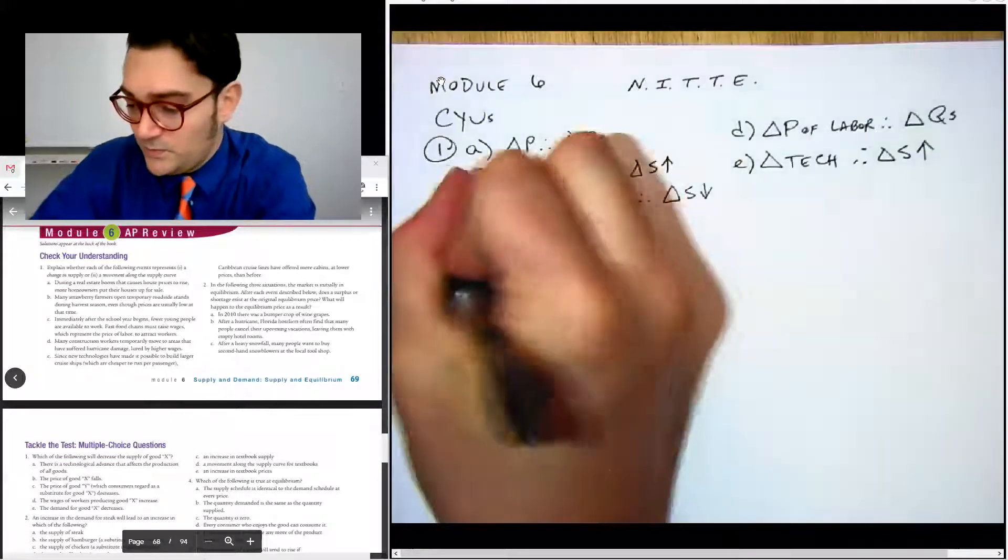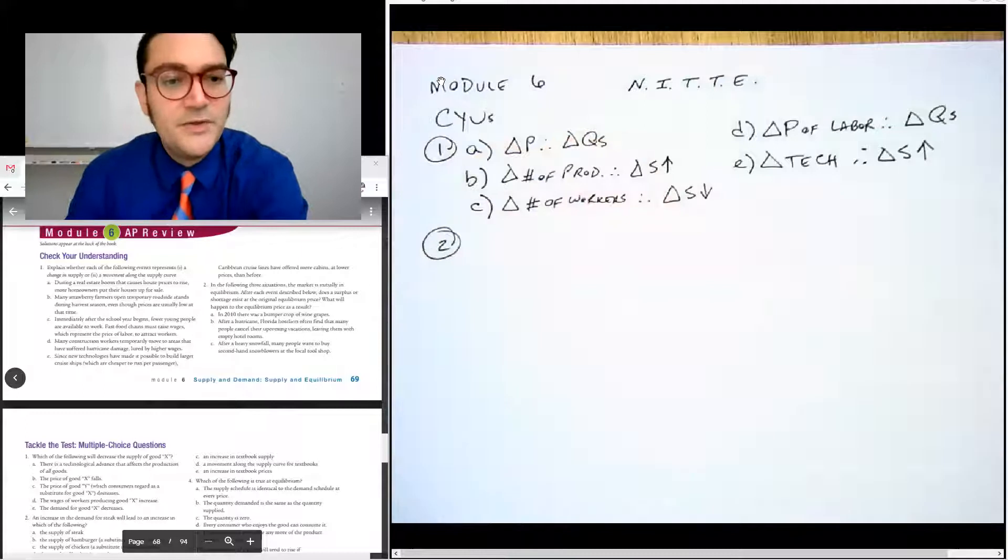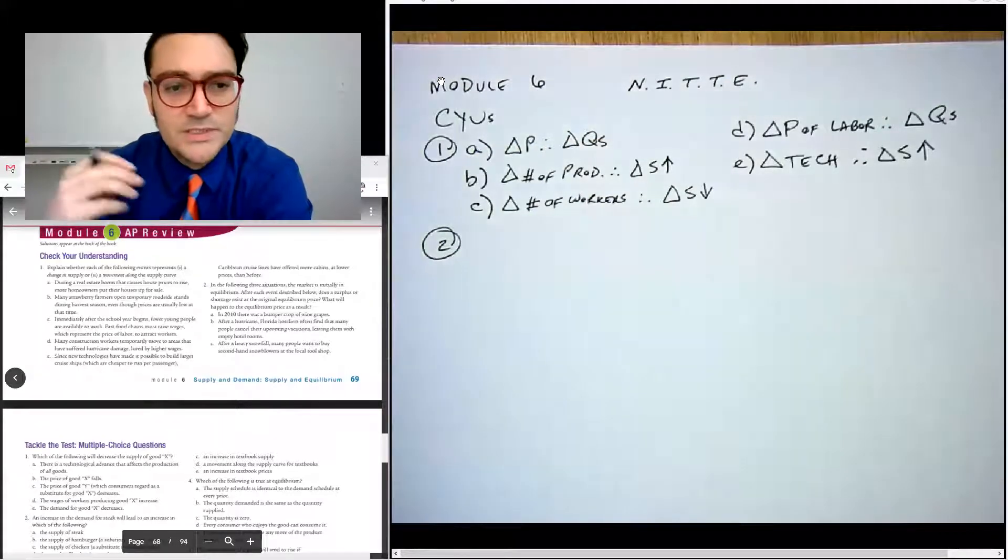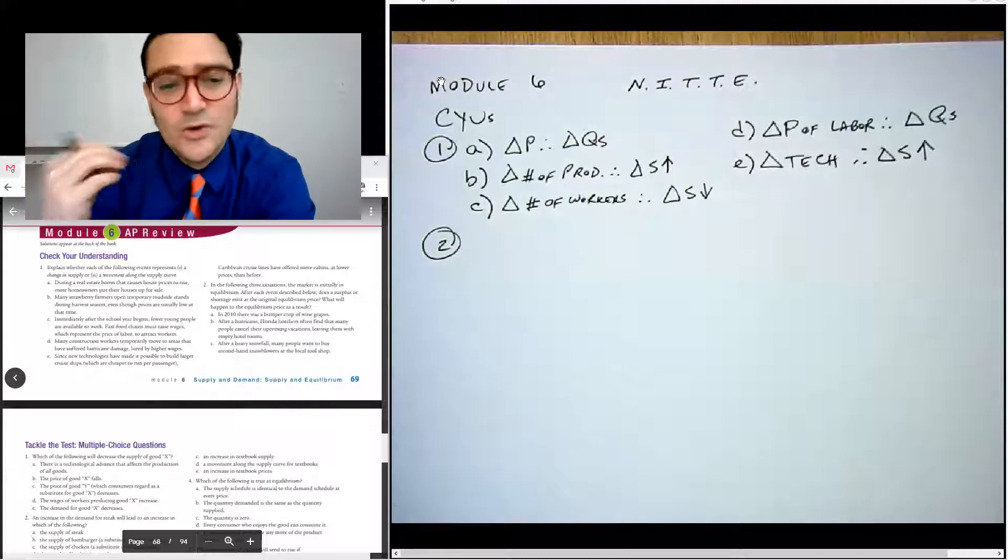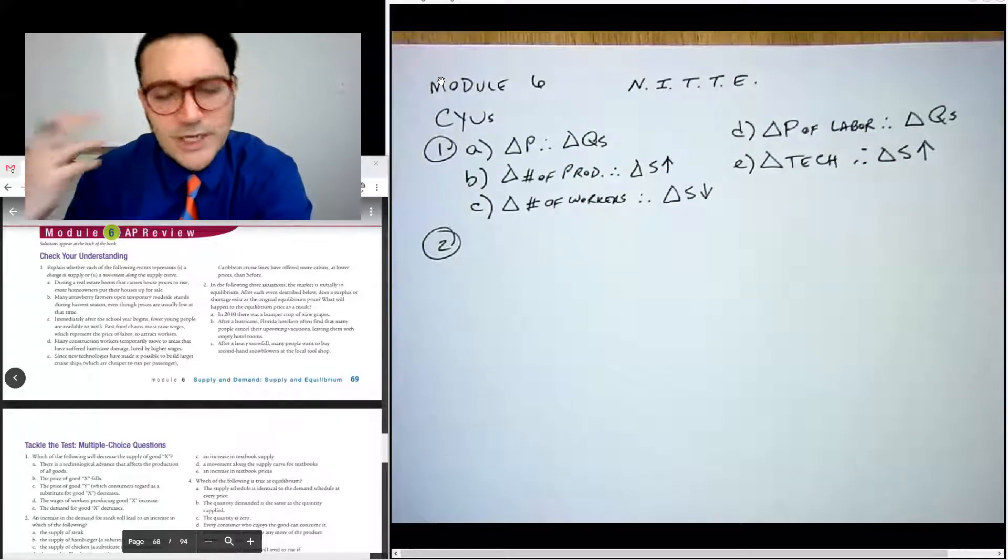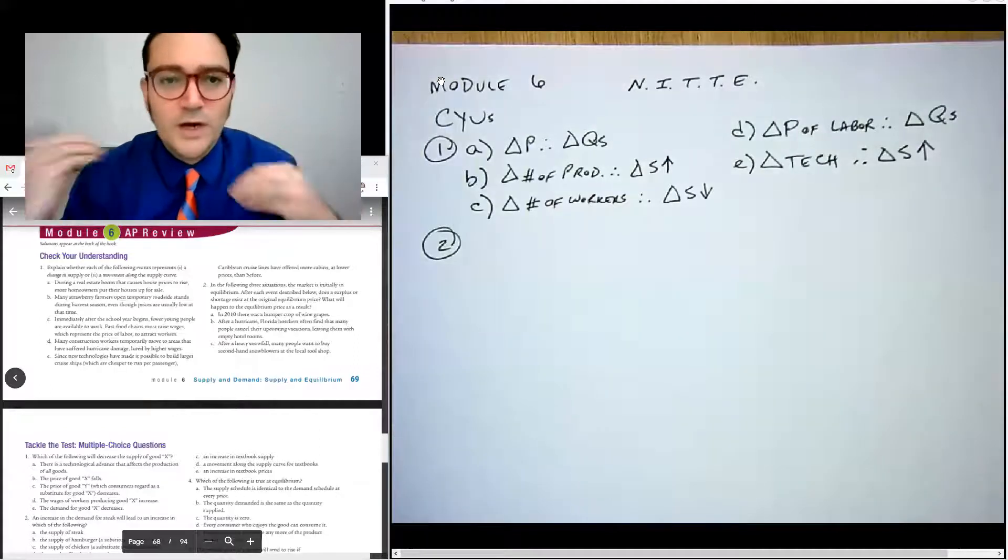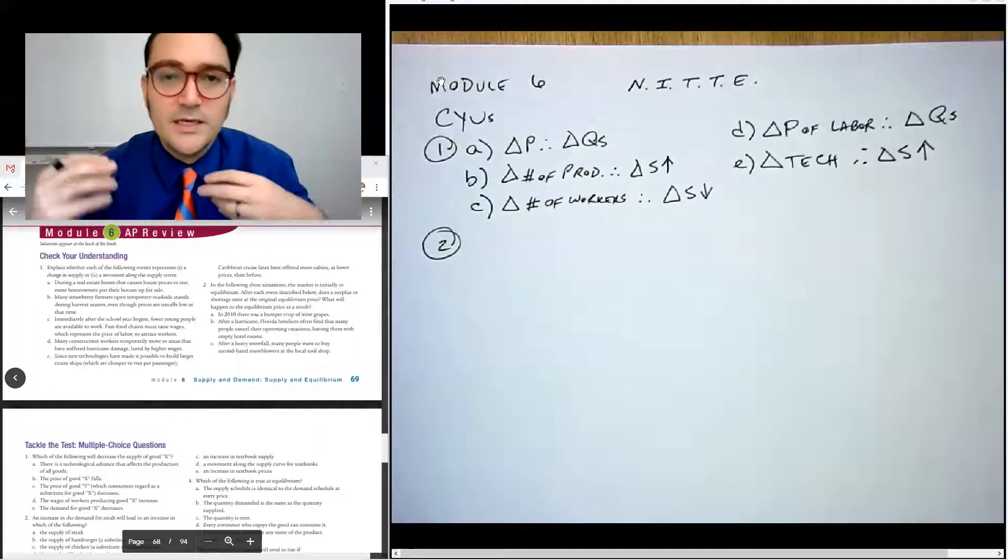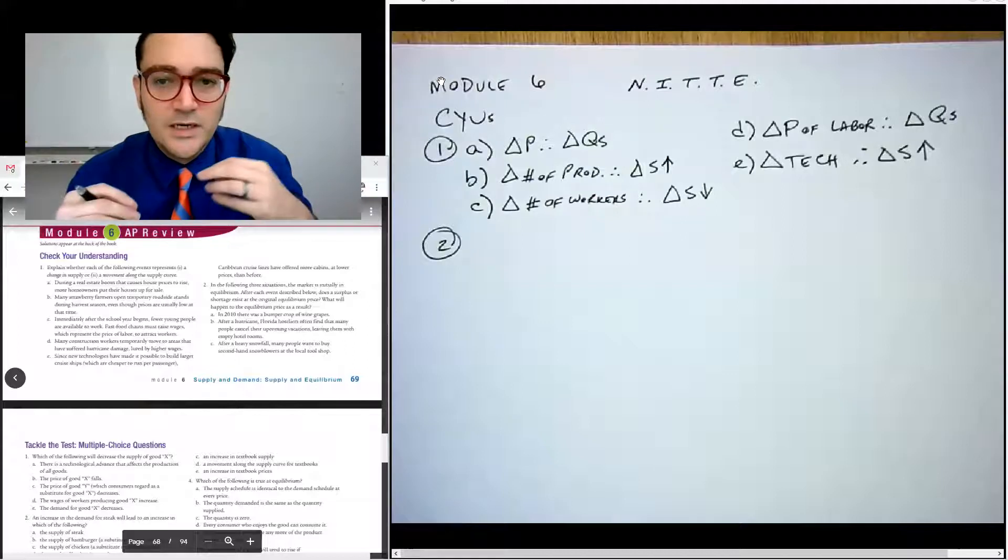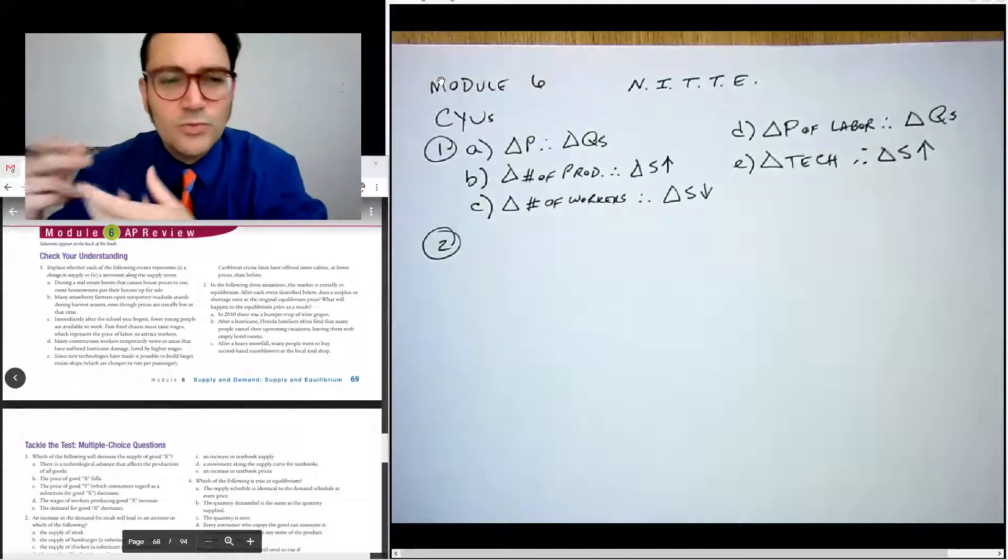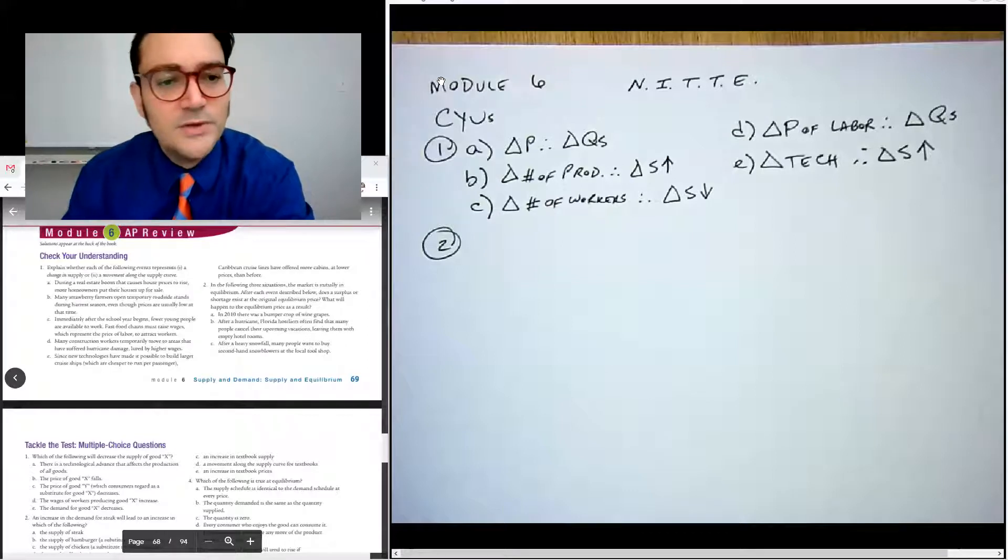Number two says in the following three situations, the market is initially in equilibrium. Afterwards, does the surplus or a shortage exist at the original price? And then what will happen to the price in the longterm as a result? So this one requires you to kind of think through what's going on in these situations. A surplus is where you have greater quantity supplied than quantity demanded. And a shortage is where you have greater quantity demanded than quantity supplied at a certain price. And we'll play around with that more in the next coming videos.